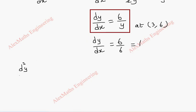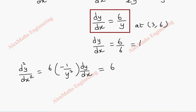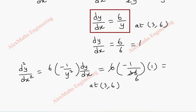d²y/dx² = 6 × (−1/y²) × (dy/dx). Substituting the point (3, 6) where y² = 36 and dy/dx = 1, we get d²y/dx² = 6 × (−1/36) × 1 = −1/6.